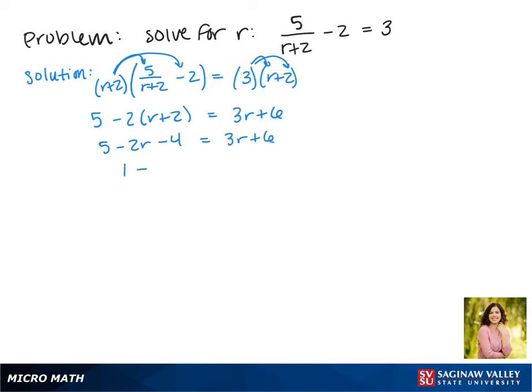We're going to combine like terms, and then we want to move the r's to one side, so we're going to add 2r so it'll cancel on the left. We also want to get the constants together, so we subtract 6 so that it'll cancel on the right.